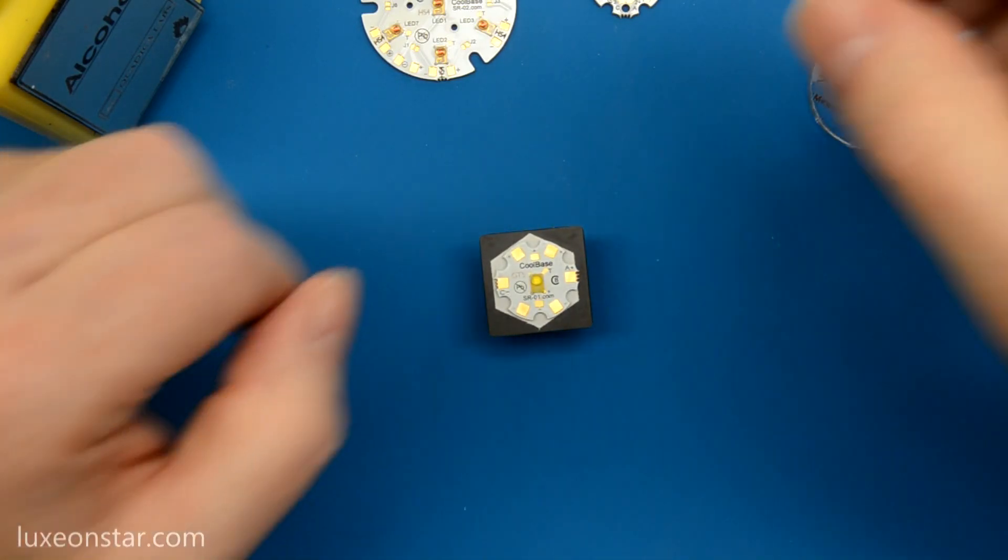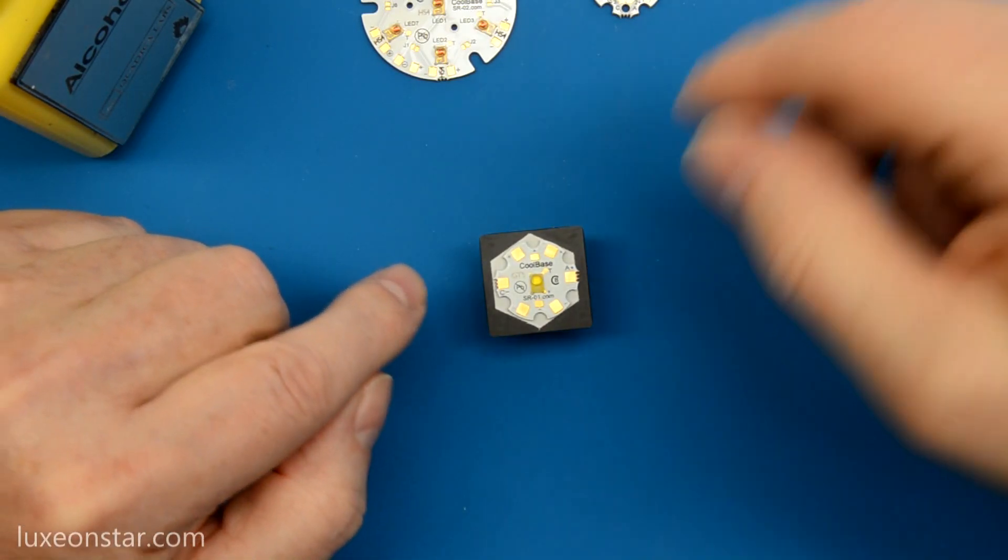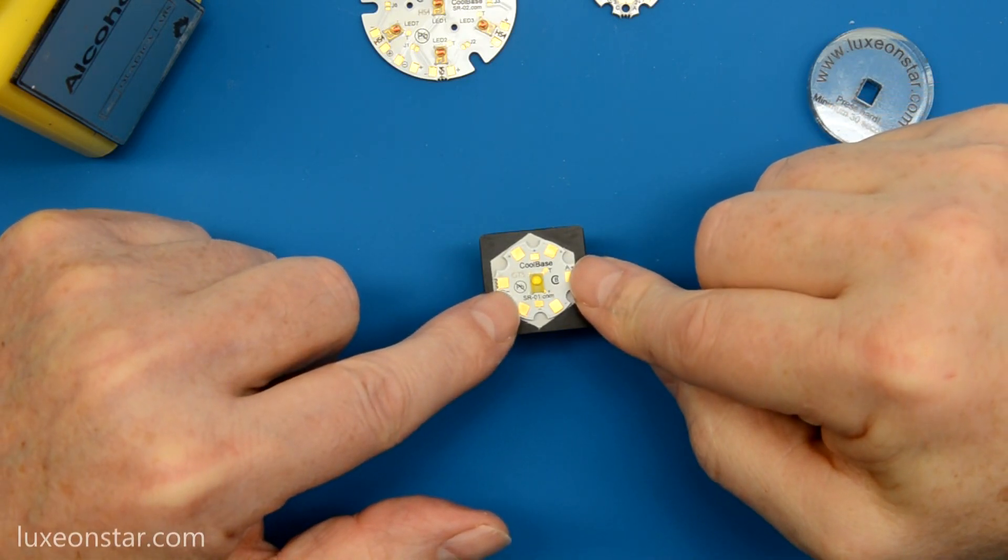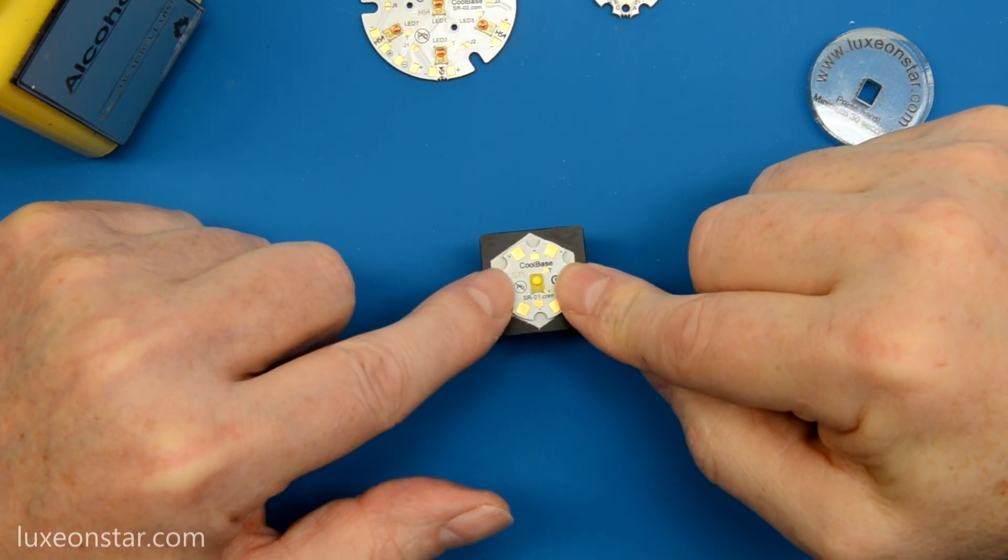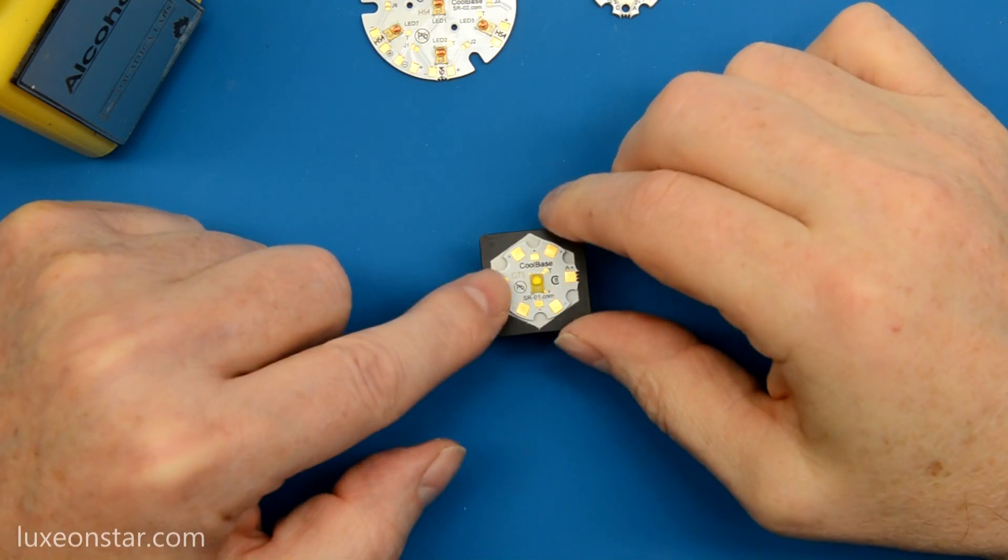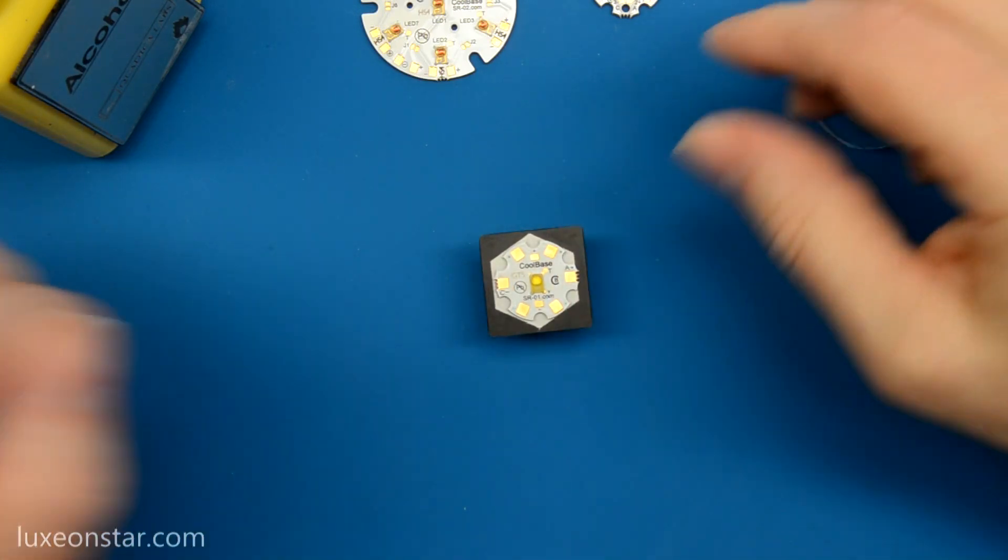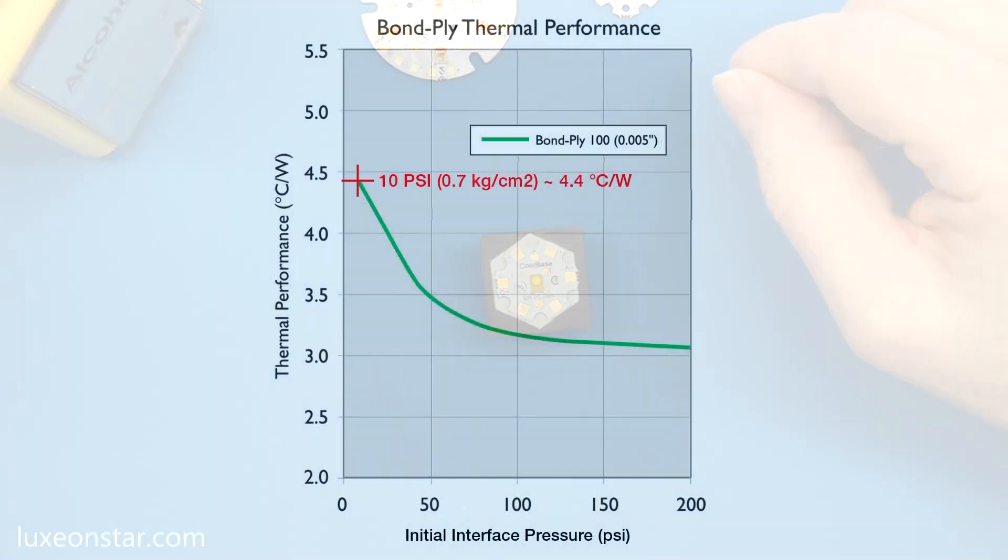To ensure a thermally efficient bond, it is very important that you apply at least 10 pounds or more of pressure on top of the LED assembly. The more pressure you can apply, the more efficient the bond will be, as shown in this graph. Here we can see that with about 10 pounds of initial interface pressure, we'll get a thermal performance of about 4.4 degrees C per watt.